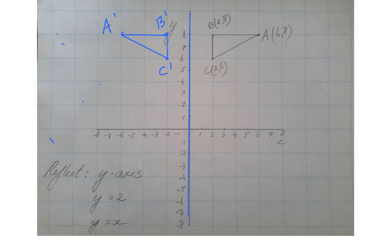Giving the coordinate of A prime, that is going to be negative six, eight. So let me just put it there. Negative six, eight. Good.